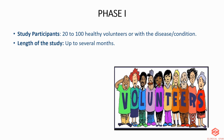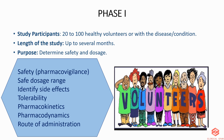The length of the study is up to several months. The purpose is to determine safety and dosage. This includes pharmacovigilance, safe dose range — which is usually a fraction of the dose that causes harm in animal testing — and identifying side effects, tolerability, pharmacokinetics, pharmacodynamics, and route of administration.